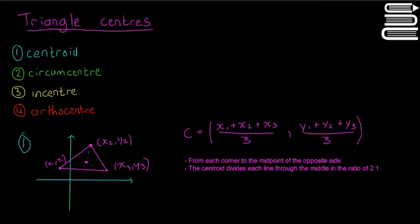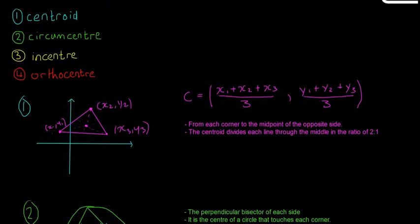So let's look at the centroid first. If you have a triangle set up like this with x1, y1, x2, y2 and x3, y3, then you can find the centroid pretty easily by just sticking it into this big formula. So x1 plus x2 plus x3 all divided by 3 and y1 plus y2 plus y3 all divided by 3.